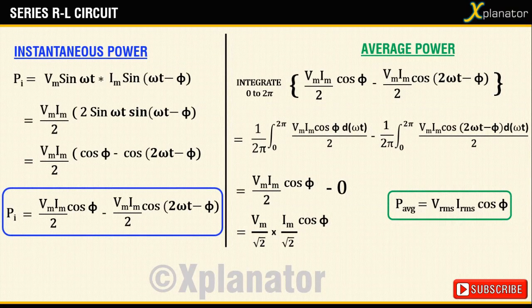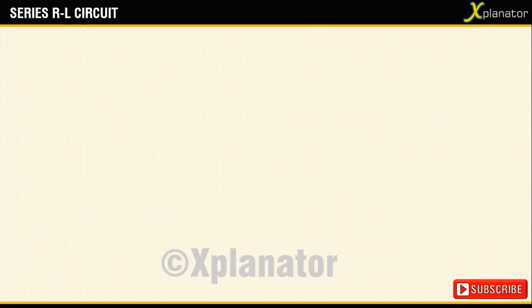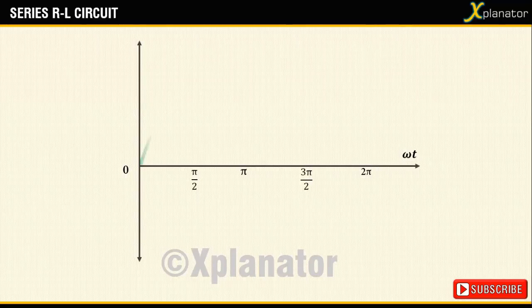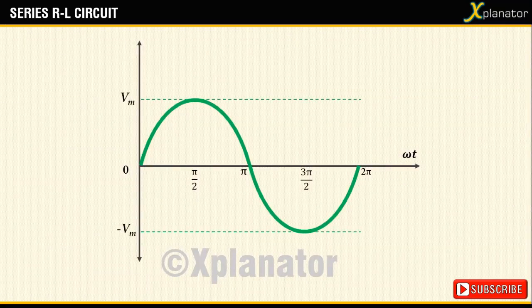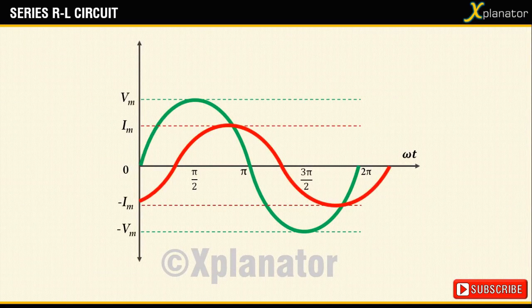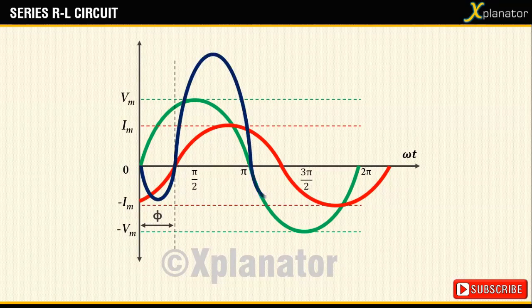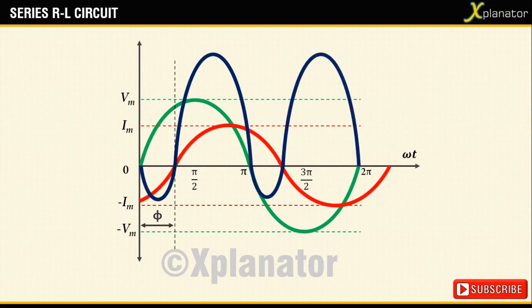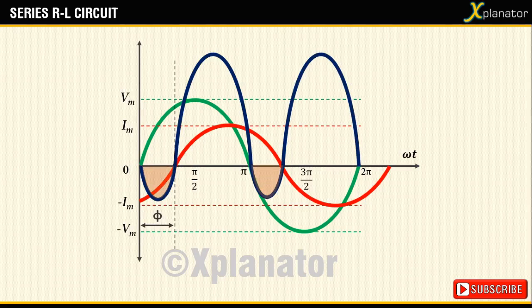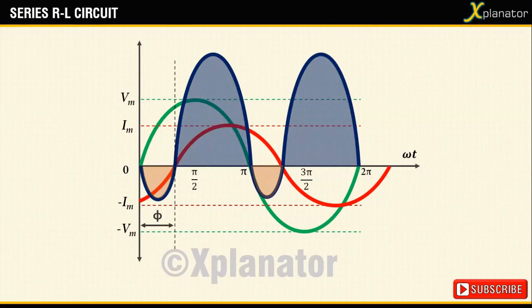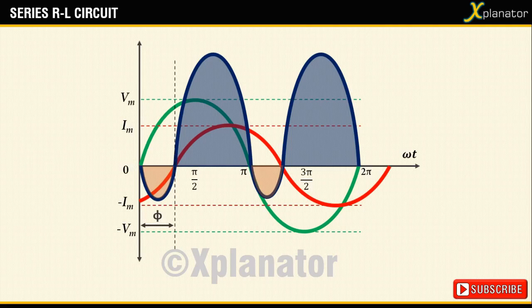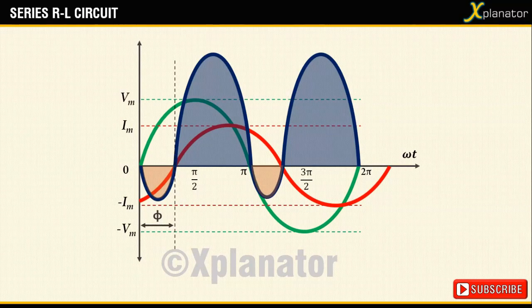To plot the average power, draw the voltage and current waveforms as has been done in the earlier videos. If you multiply both, you will see that the resultant curve has a pattern as shown. But unlike in the case of a pure inductor, the negative halves are not large enough to cancel out the positive halves. So there will be some power loss, but it depends on the values of R and L in the series circuit.